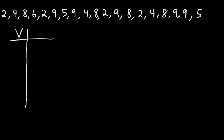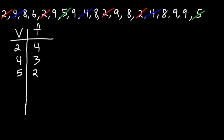Let's start with a two-column table — V for value, F for frequency. The lowest value we have is a 2, and there are 1, 2, 3, 4 twos. The next highest value is a 4, and there are 1, 2, 3 fours. Next up is a 5, and we have 1, 2 fives. There's only 1 six. Next we have an 8: 1, 2, 3 — there's a total of 4 eights. And the highest value is a 9, and we have 1, 2, 3, 4, 5 nines.